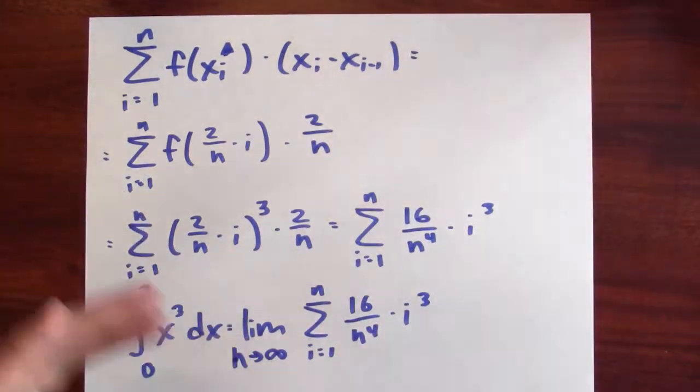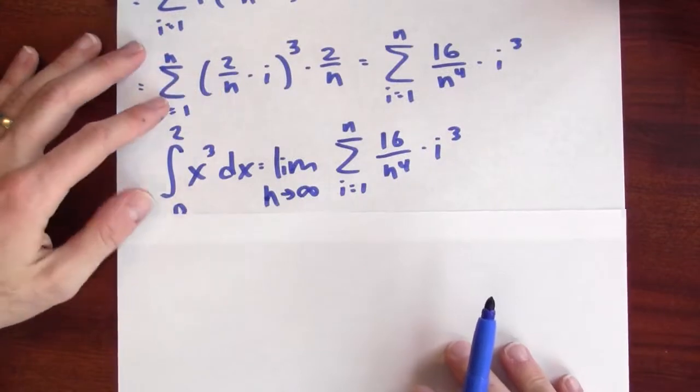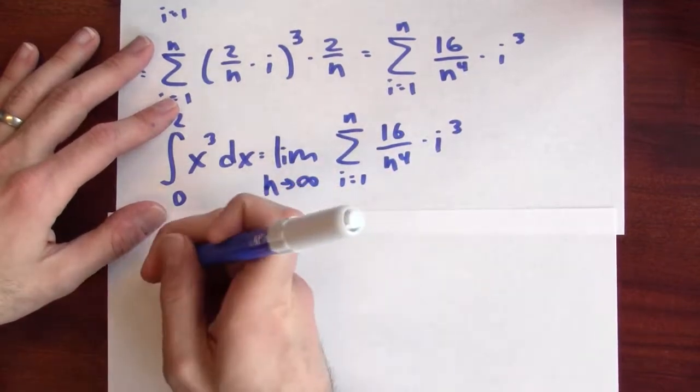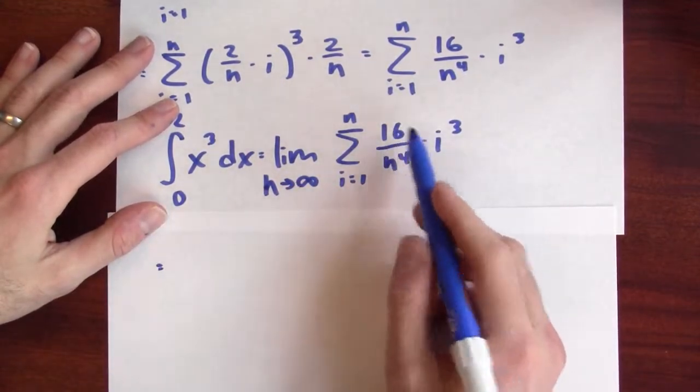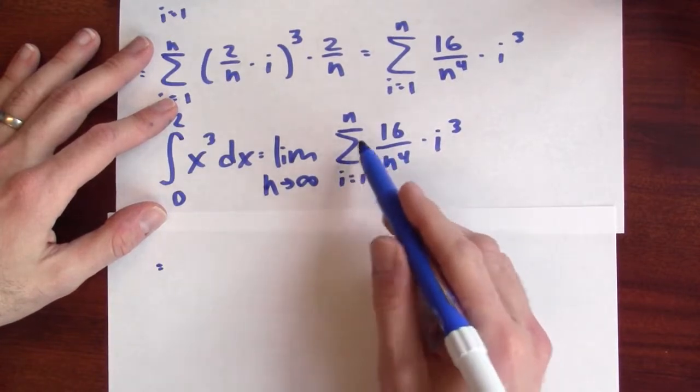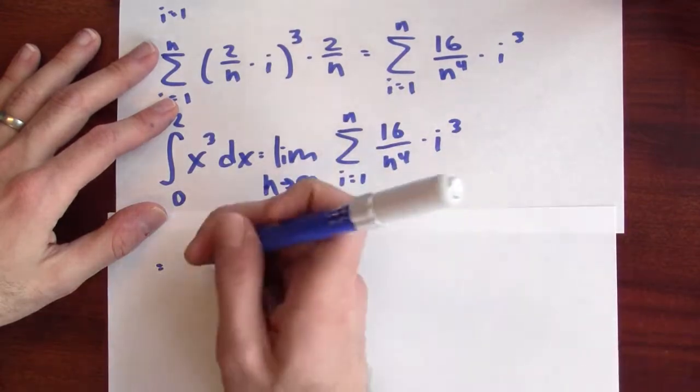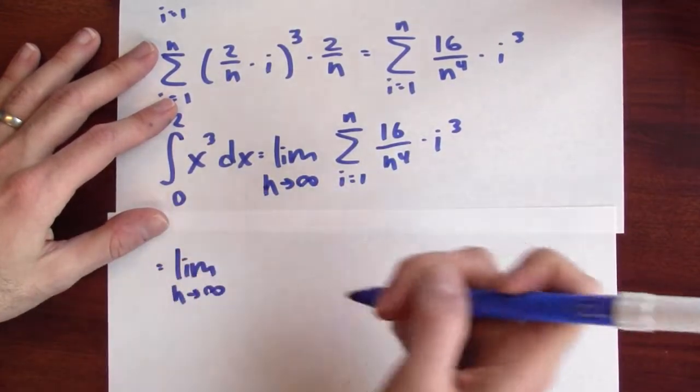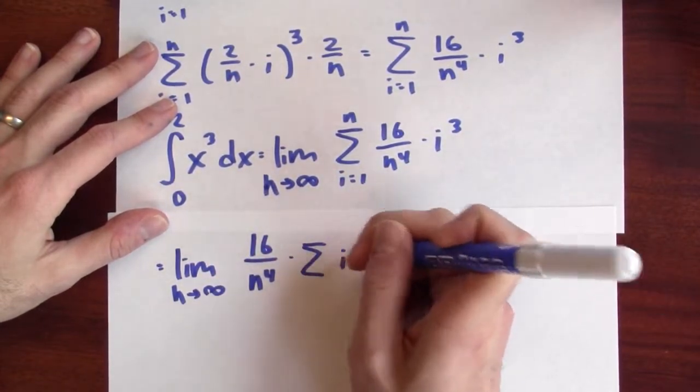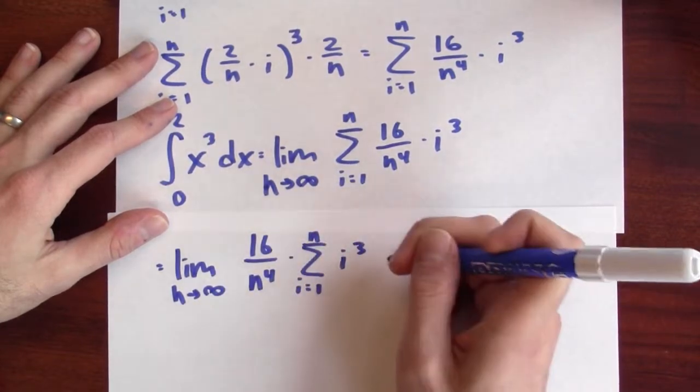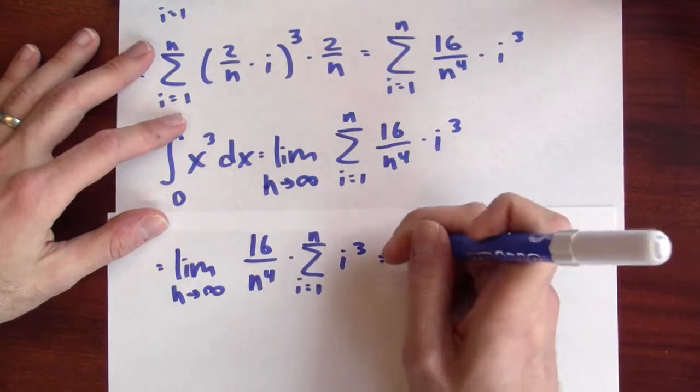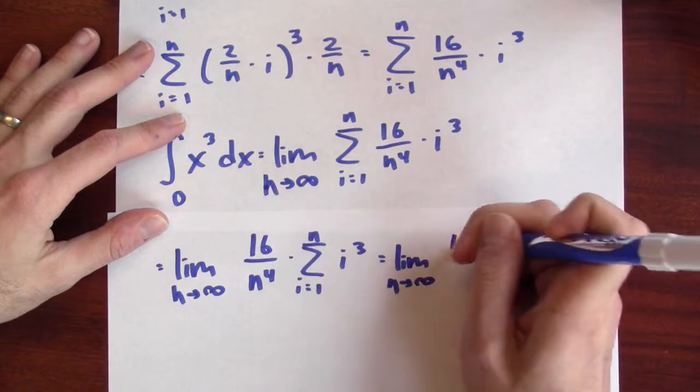Well, let's see if we can do that. The good news here is that I've got a formula for the sum of cubes. And I've also got a constant here. 16 over n to the 4th is a constant. It doesn't depend on i at all. So I can factor that out of this sum by distributivity. So this is the limit as n approaches infinity of 16 over n to the 4th times the sum of i cubed, i goes from 1 to n. And now I happen to know what the sum of the first n cubes is.